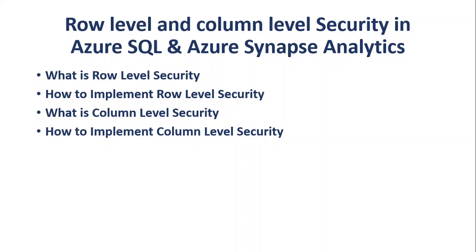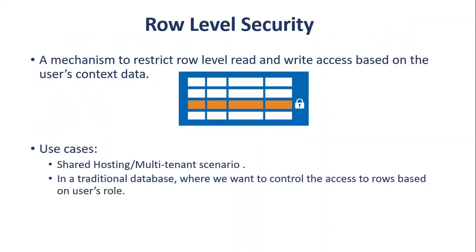For your information, row level and column level security can't be applied in Azure Data Lake Gen2 and Cosmos DB. We'll start with row level security. Basically, it's a mechanism to restrict records, read and write access based on the user context.